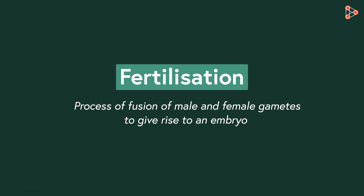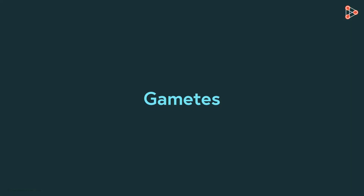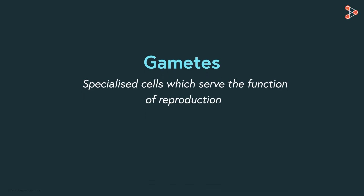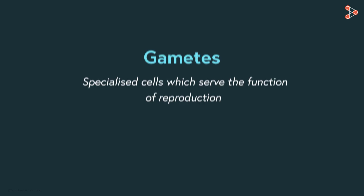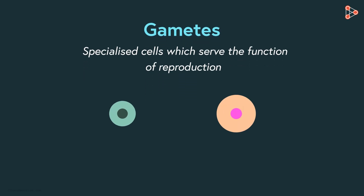Before understanding this process, let's understand a few new terms. Firstly, let's get to know what gametes are. Gametes are the specialized cells which serve the function of reproduction. We find these cells in organisms that carry out sexual reproduction. For now, we only need to know that gametes will be different in the males and the females.